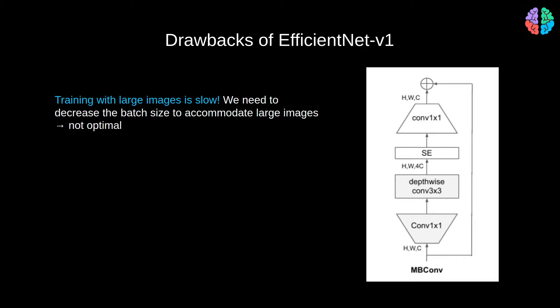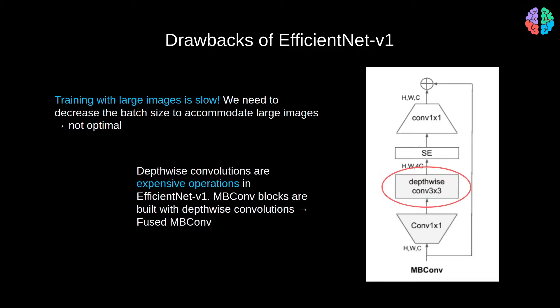So the other problem with EfficientNet version 1 is that it has depth-wise convolutions. And depth-wise convolutions are usually slow, so it'll be nice to get rid of the depth-wise convolutions in the network. So they chose to use fused MBConv instead of simple MBConv. In fused MBConv, the depth-wise convolution is fused with the 1x1 conv layer before it.